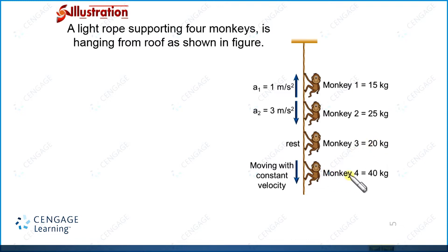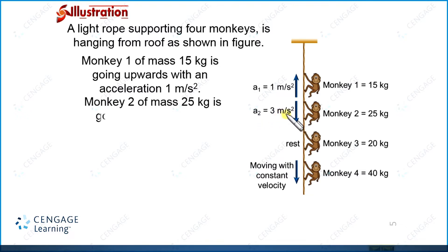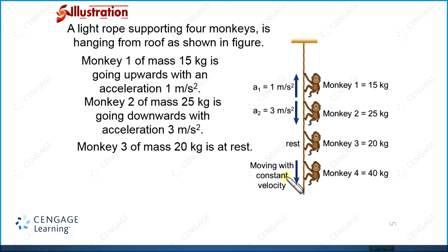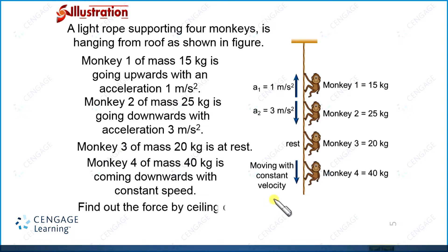monkey 3 is 20 kg, monkey 4 is 40 kg. The accelerations of the monkeys are given: monkey 1 upward direction 1 meter per second square, monkey 2 downward direction 3 meter per second square, this monkey is at rest, and this monkey is moving downward with constant velocity. Here we need to find the force of ceiling on the rope. This is the question.